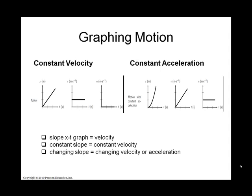We just talked about what it meant for something to be constantly accelerating. That means it's changing its velocity by the same amount each instant in time, which means its position function will be parabolic, but its velocity function will be a straight line.